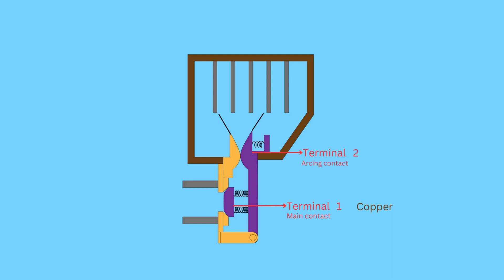The second pair is the arcing contact and is made of carbon. Arc runners, which are connected to the arcing contact, provide a path for the arc.